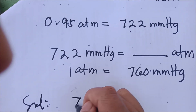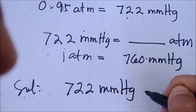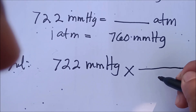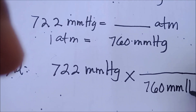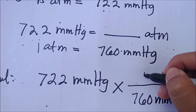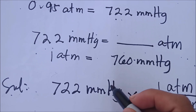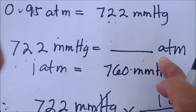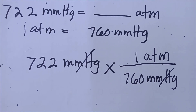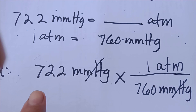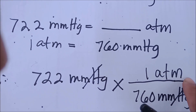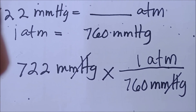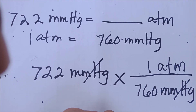To solve: write 722 mmHg times the conversion factor with 760 mmHg in the denominator — so that mmHg cancels — and 1 atmosphere in the numerator, since atmosphere is the required unit. The calculation is 722 times 1 atmosphere divided by 760. Computing this in your calculator gives a value of 0.95 atmosphere.